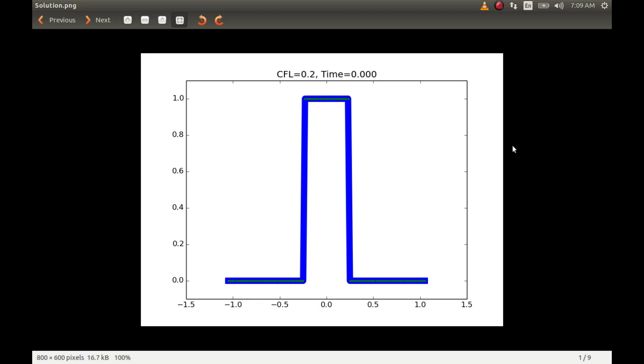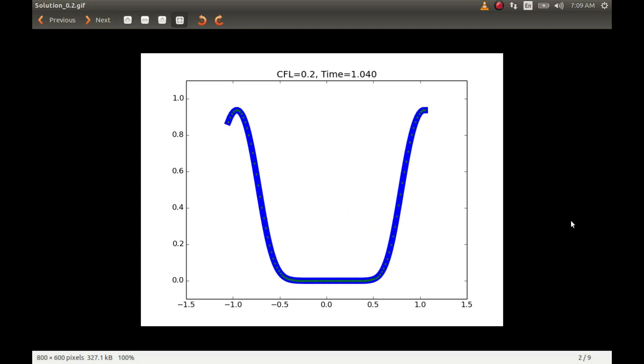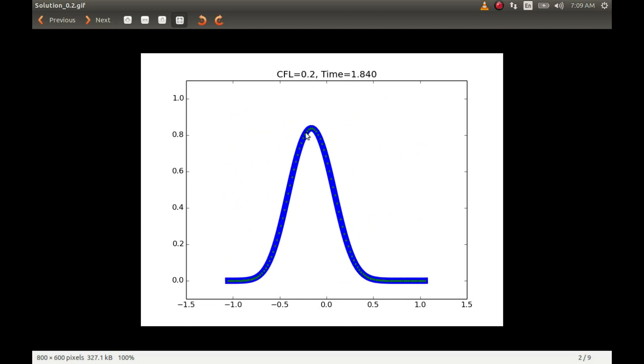So what I have done is I have run this same code for various CFL numbers starting with CFL number 0.2, and here is the animation of the results obtained. You can see that the wave, the square wave which we started with, is quite diffused and the peak of the wave is obviously much lower than 1. Also it is no more flat as we started with. The peak has reached somewhere here which is around 0.85 I think.